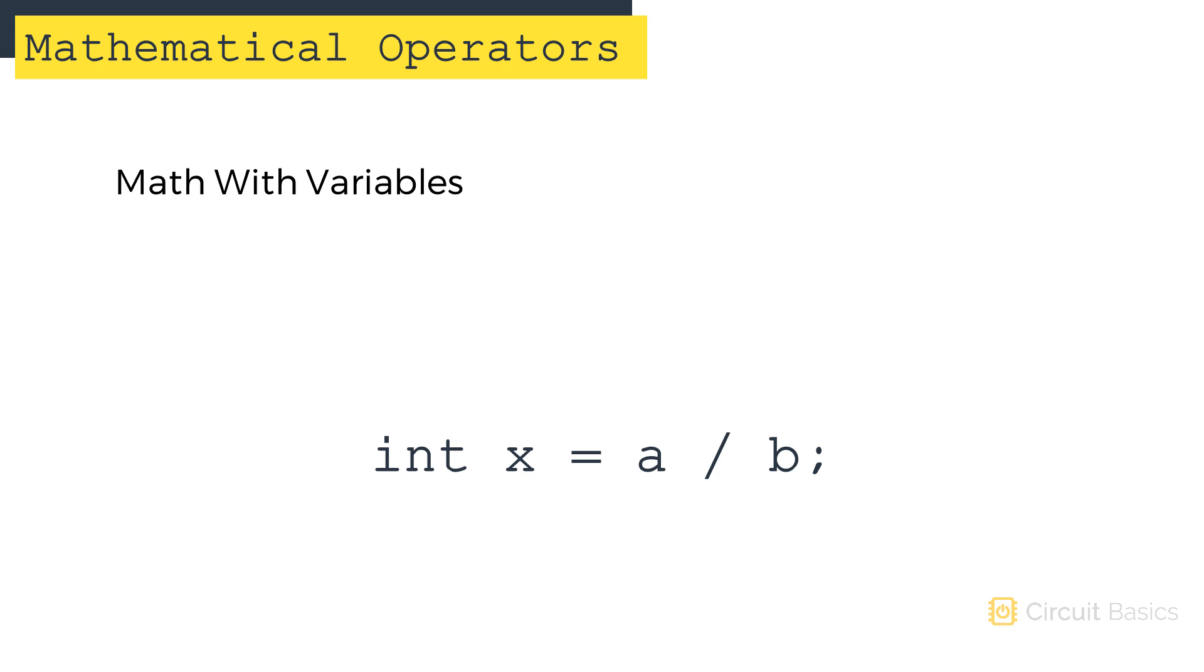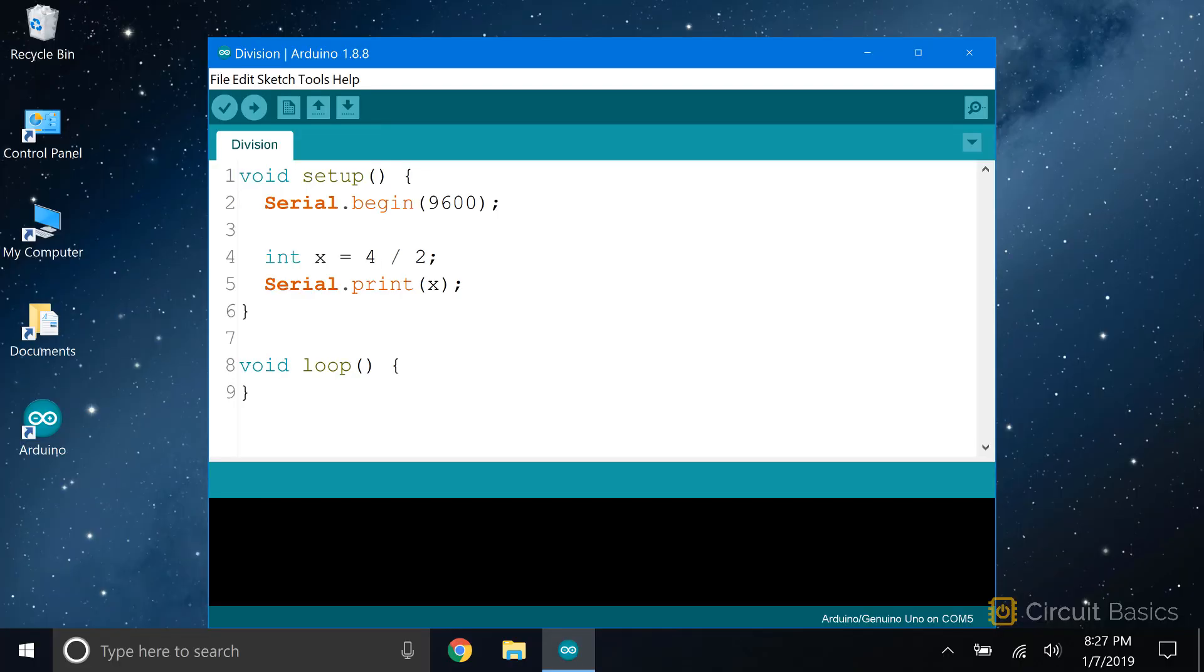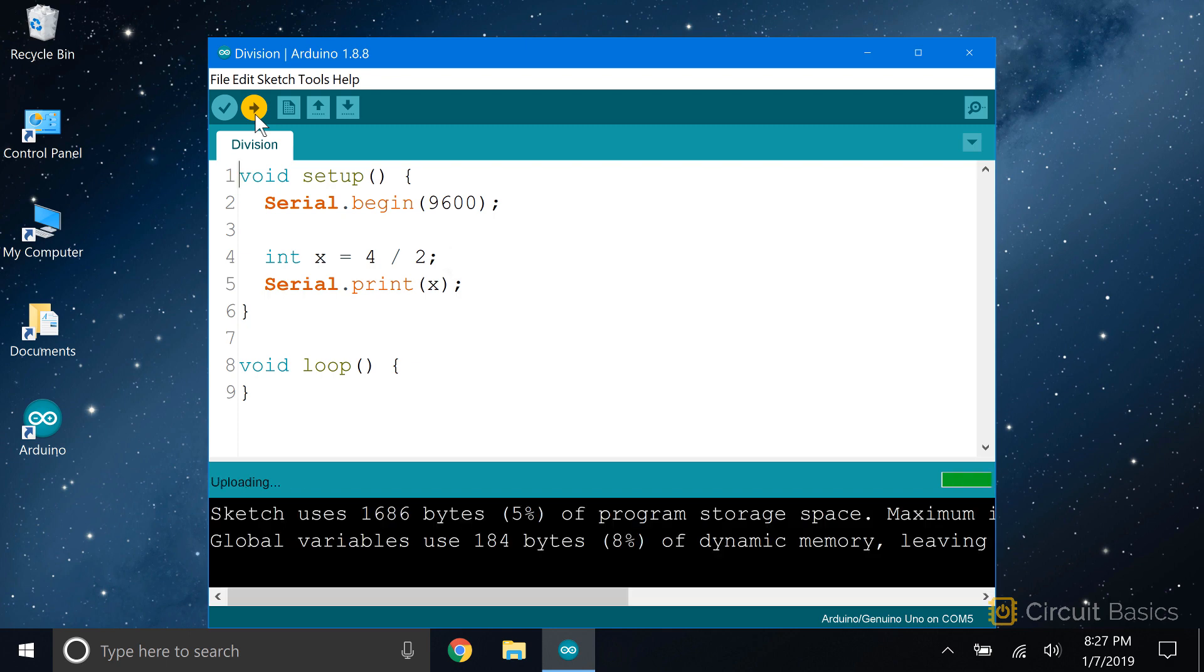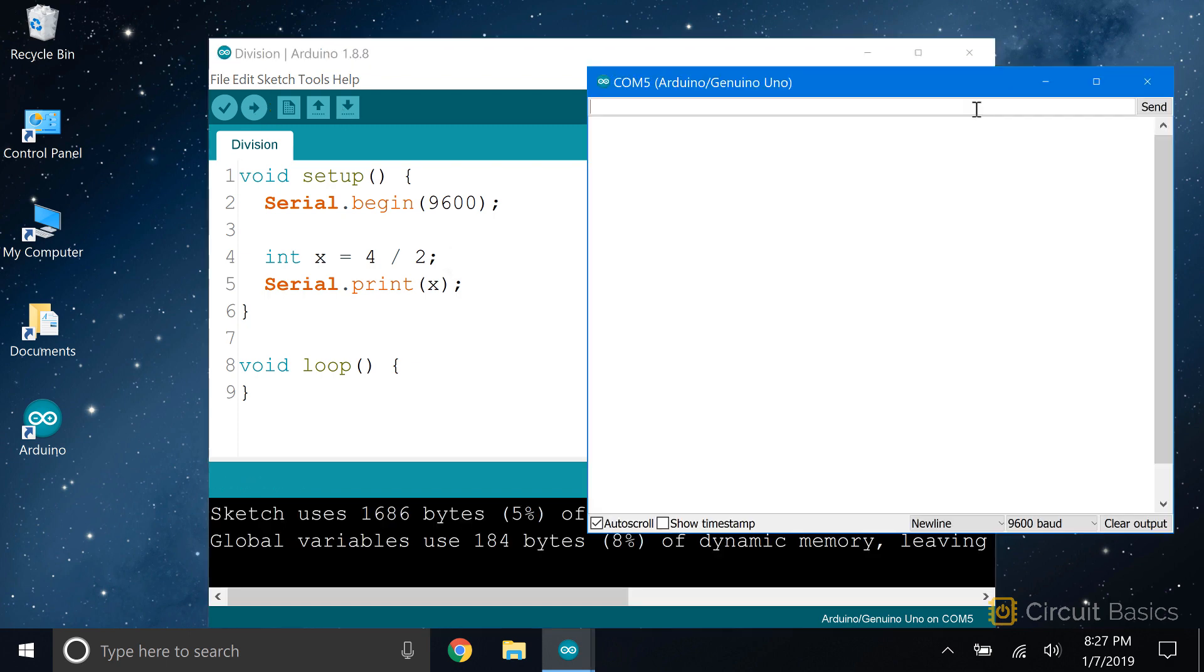Now that we're talking about division, I want to show an important quirk to be aware of when dividing numbers. Say we want to divide 4 by 2 and print it to the serial monitor. Pretty simple, x equals 2.